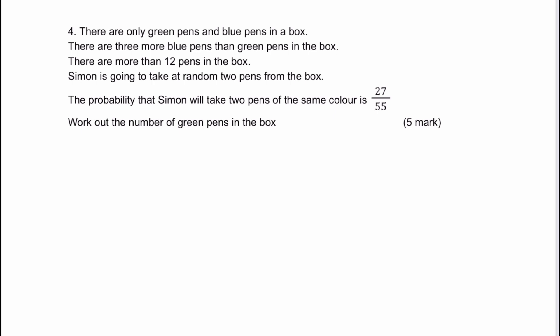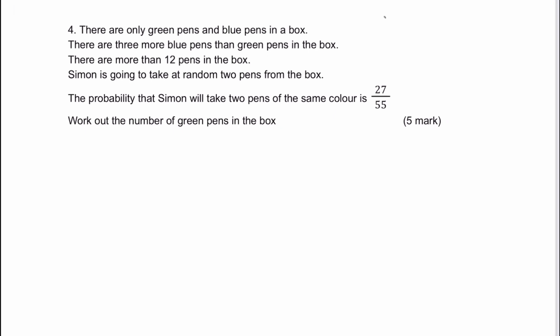I think to begin with, what I would do is say, if green pens equals x, then blue, if there's three more blue pens than green pens in the box, that must be x plus 3. And also the total amount of pens in the box must be the value of the green, the value of the blue, plus 3. So therefore, that's going to be 2x plus 3.